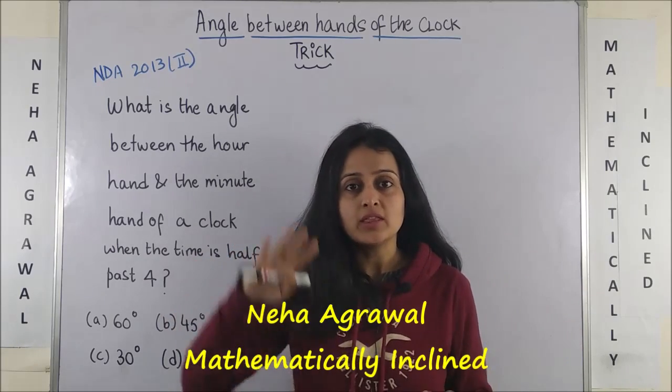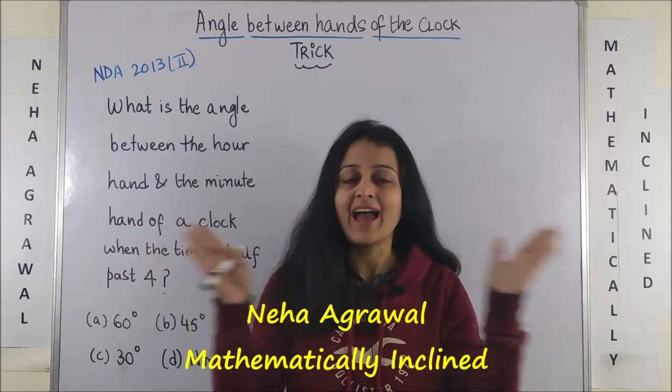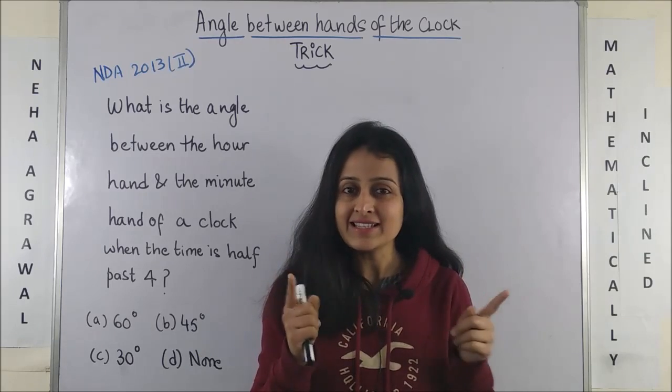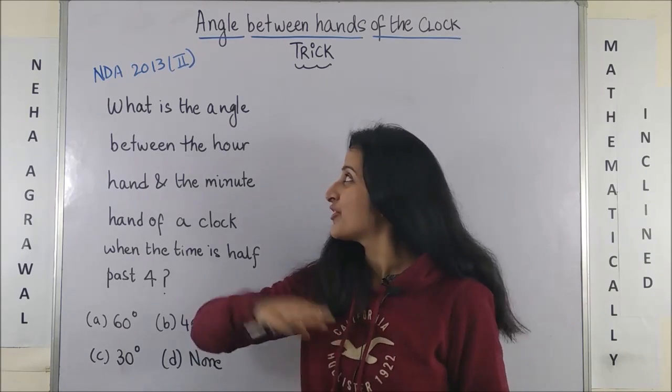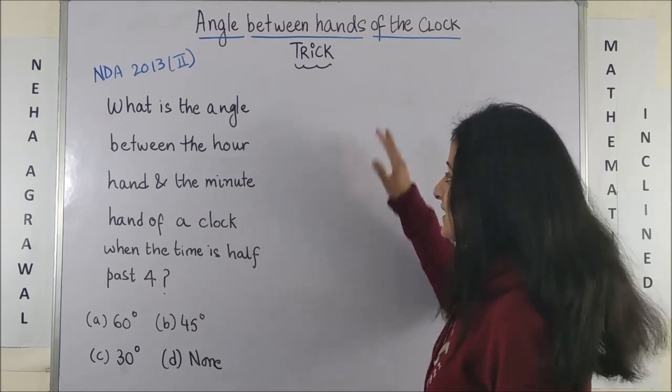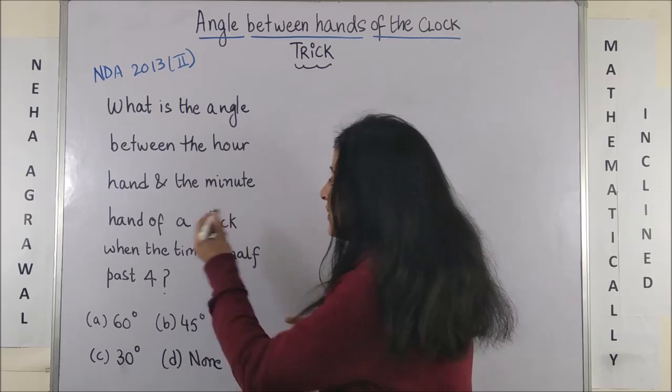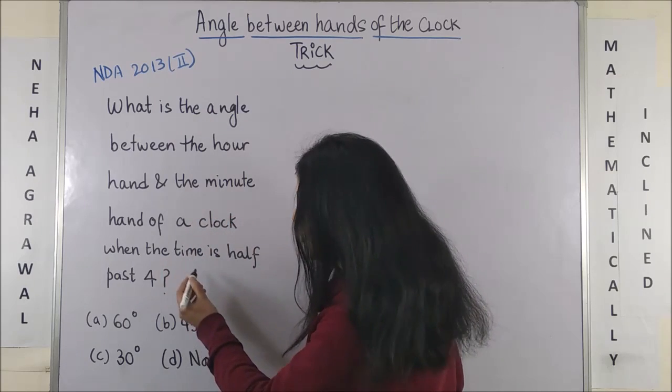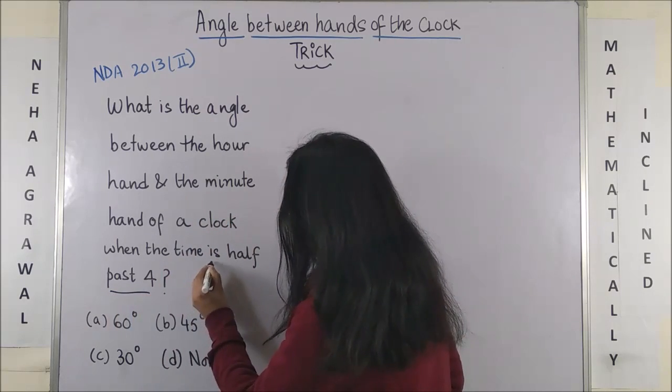What is the angle between the hour and the minute hand of a clock? Let's discuss this special question from NDA 2013. What is the angle between the hour hand and the minute hand of a clock when the time is half past four?